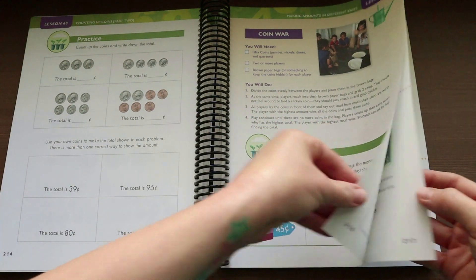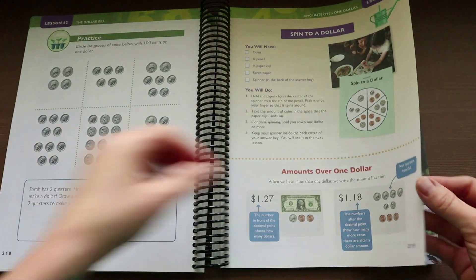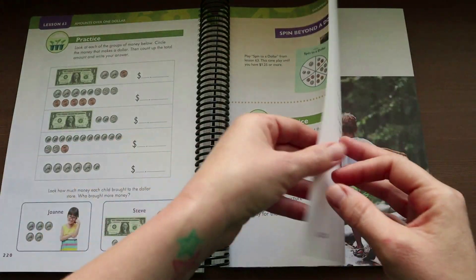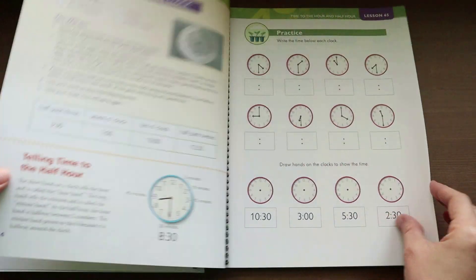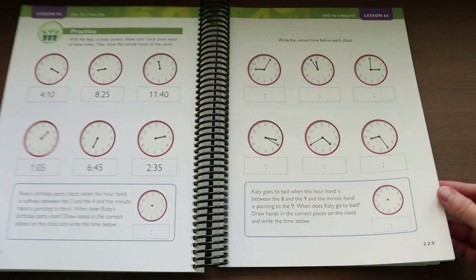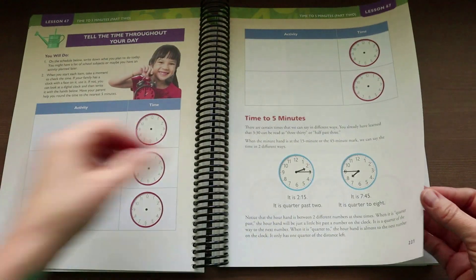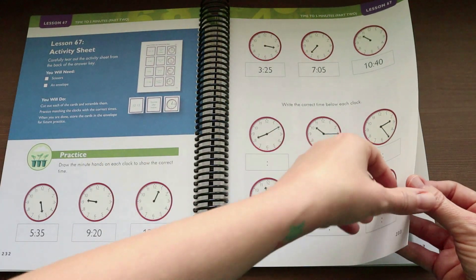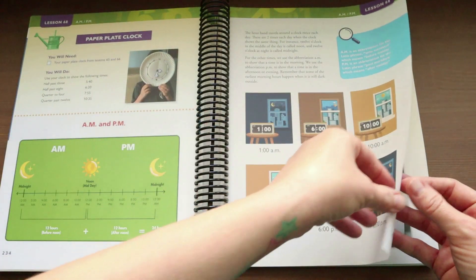Unlike some of the higher levels of Apologia's Math there are not any tests in this grade level but like I mentioned you can go to their website for the book extras if you feel like your child needs a little extra practice or you want to do some review you can get those sheets there.